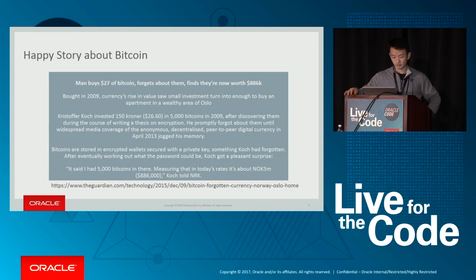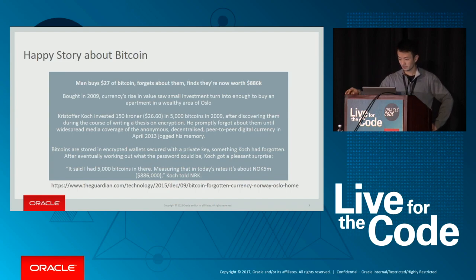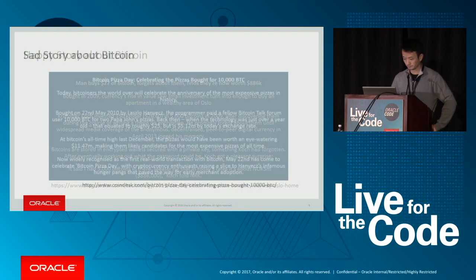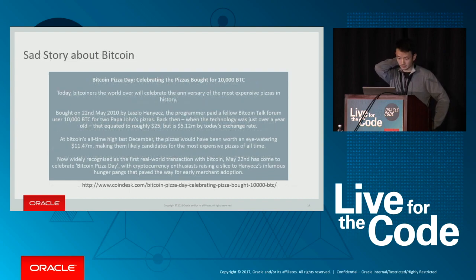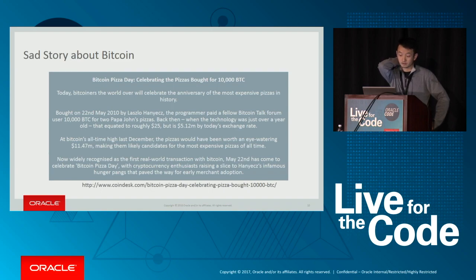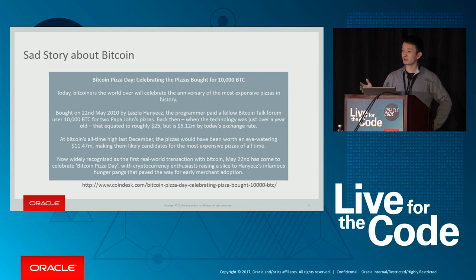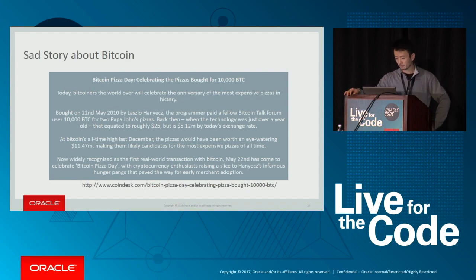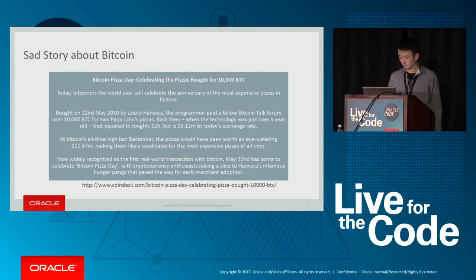Some happy stories about Bitcoin: a young guy bought $27 worth of Bitcoin, forgot about them, and after a few years bought an apartment with it. And you've probably heard the crazy pizza story — considered the first official Bitcoin transaction, where someone bought two pizzas using 10,000 Bitcoins. That's probably the most expensive pizzas ever. May 22nd is now considered Bitcoin Pizza Day.